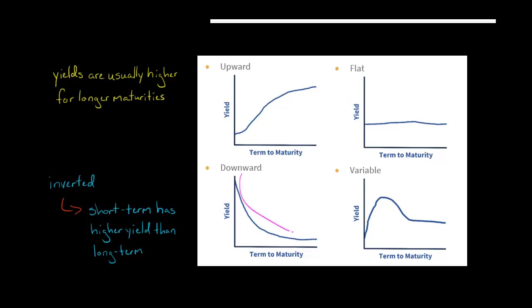You could also have a downward sloping yield curve, which is commonly called the inverted yield curve. And with an inverted yield curve, the yield happens to be higher for a shorter term to maturity than it is for a longer term to maturity.